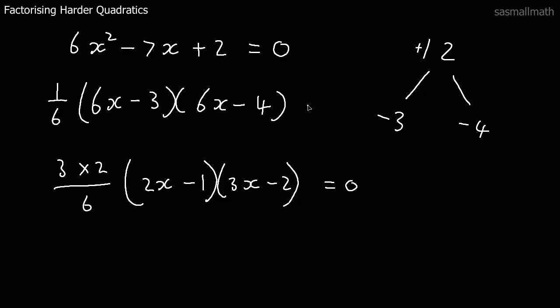And remember that equals zero. We should have put that there as well. This is, of course, three times two is six. Six over six is one. So that just becomes one. So now all we've got to do is either this bracket is zero or this bracket is zero. I'll do it formally so we can just see how it all works. So two x minus one equals zero. Move this around. So x must equal one over two. Or three x minus two equals zero. X equals two thirds.